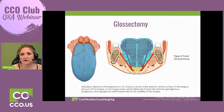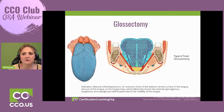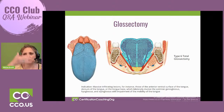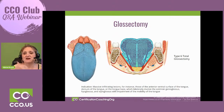Type 6 is a total glossectomy, indicated for massive infiltrating lesions involving the anterior ventral surface, dorsum, and bilateral tongue base, with involvement of extrinsic muscles including the genioglossus, hyoglossus, and styloglossus with impairment of tongue mobility. When you look at the dissection cross-section, the removal extends down into the subQ fat near the hyoid bone. The more tongue removed, the more limited the articulation.